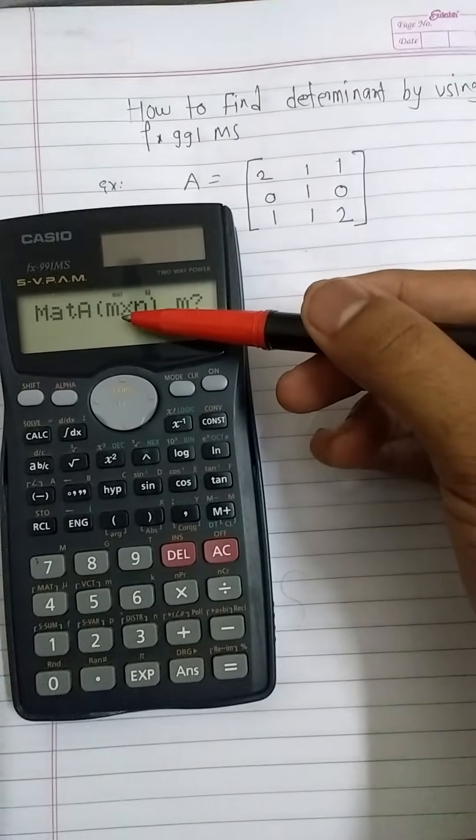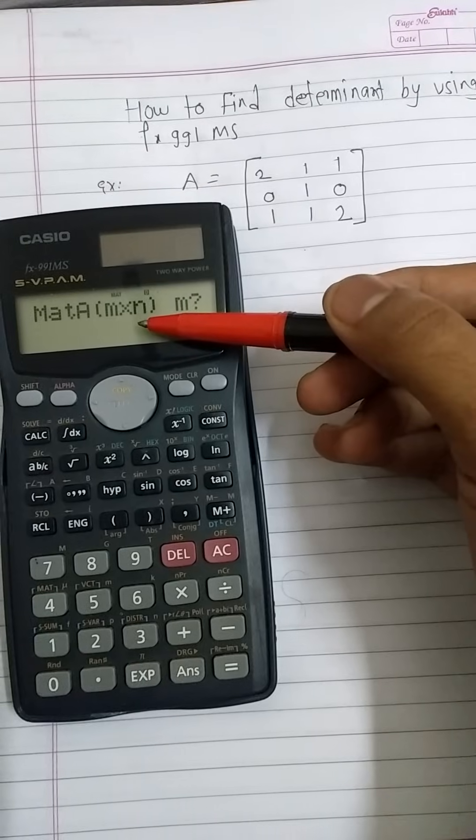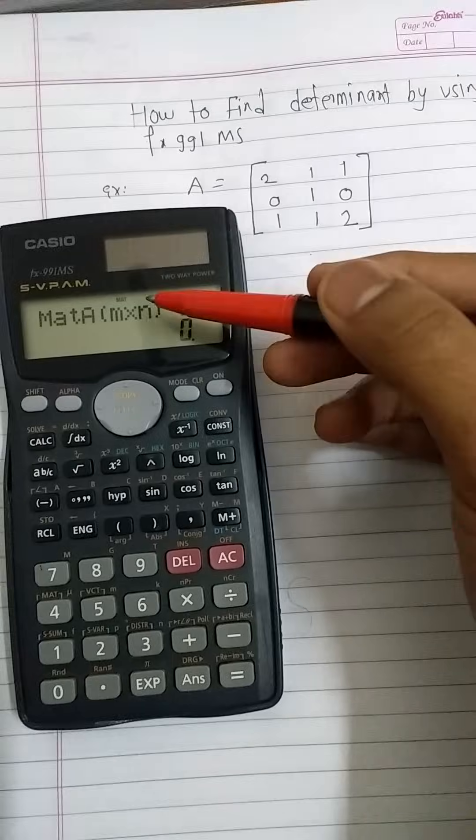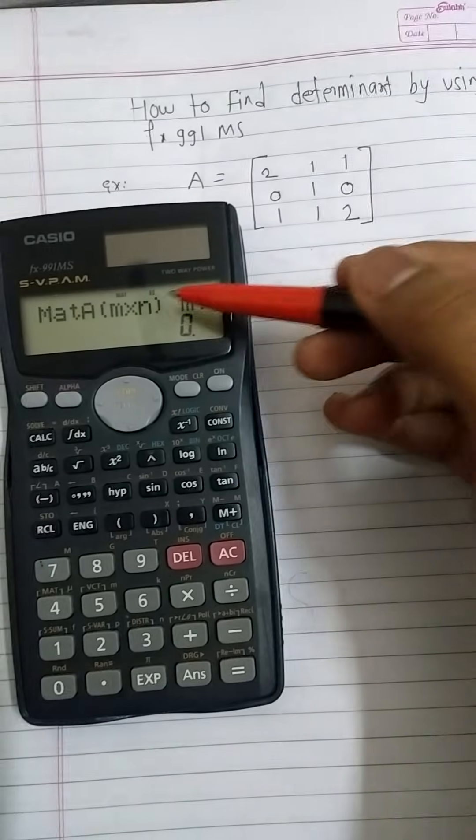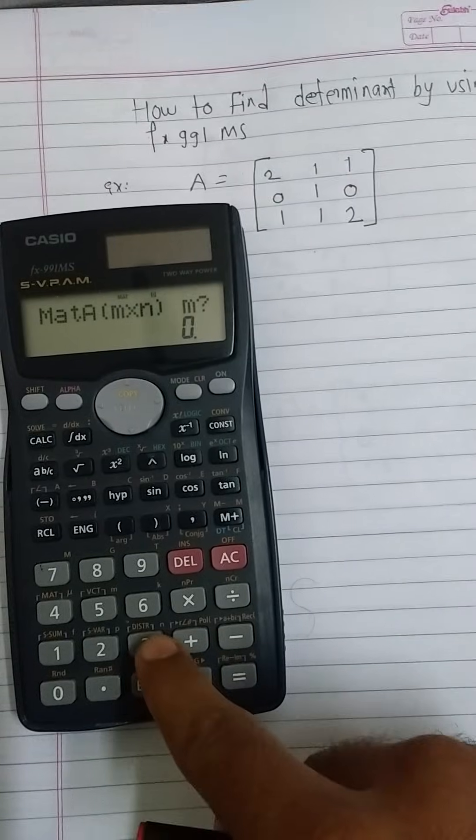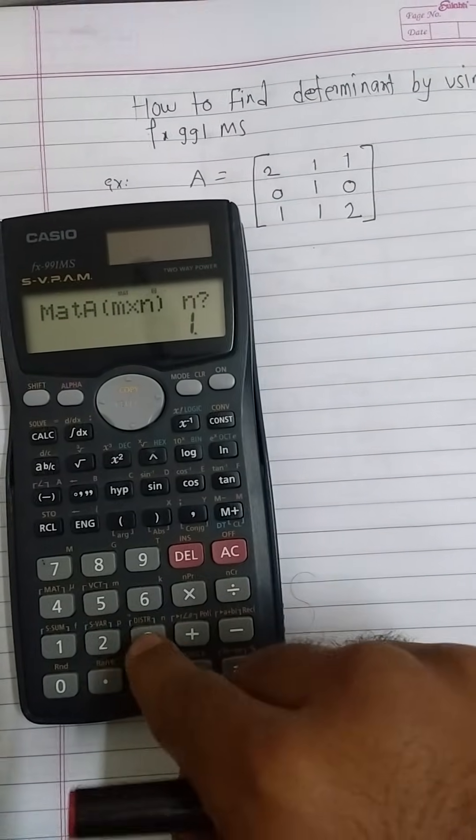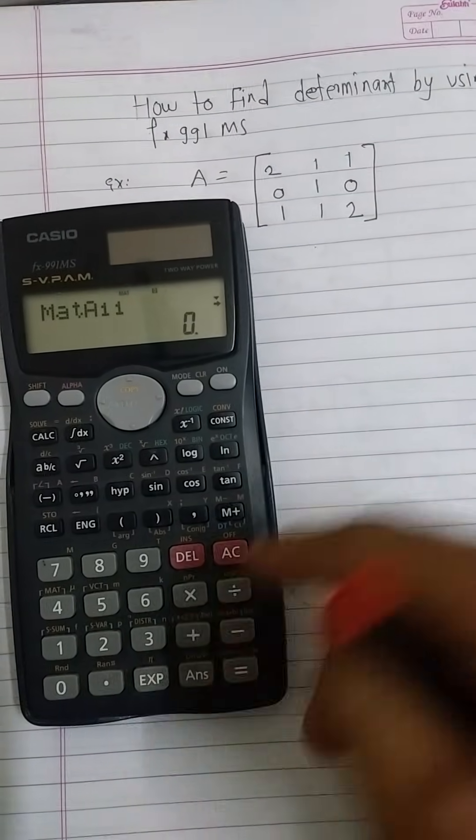After choosing matrix A, we are interested to decide the dimension of the matrix. Here M is for number of rows and N is for the number of columns. Our matrix is 3 by 3 matrix, therefore I am pressing M equals 3 and N equals 3. Press M equals 3, press equal button. Again press N equals 3, press equal button.